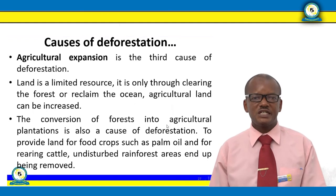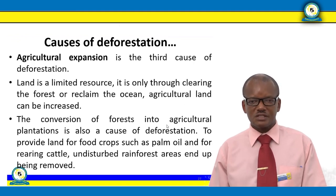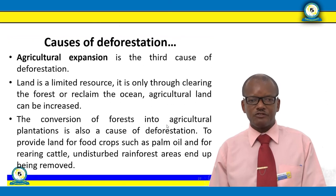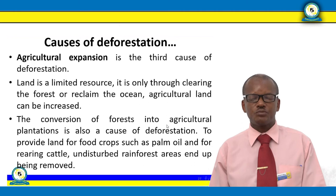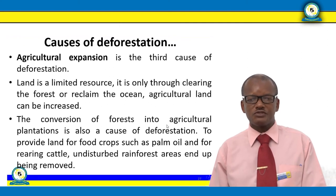Another cause of deforestation is agricultural expansion. This involves expanding agriculture at the expense of the forest. Land is a limited resource; it is only through clearing the forest or reclaiming the ocean that agricultural land can be increased. The conversion of forest into agricultural plantation — for example to provide land for food crops such as palm oil or clearing land for cattle — is also a cause of deforestation.